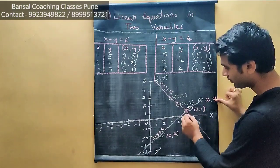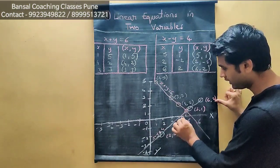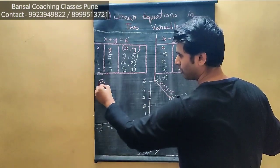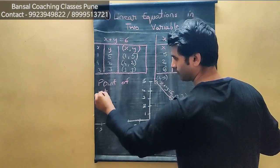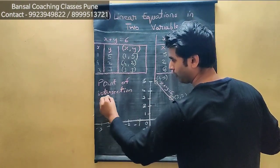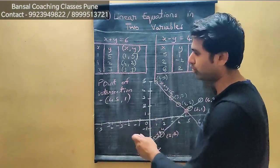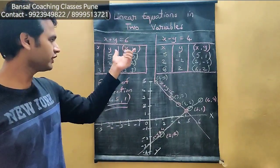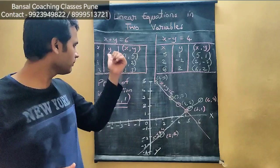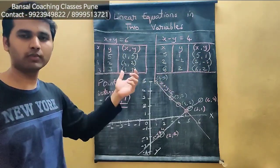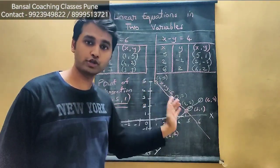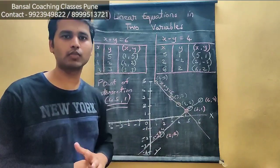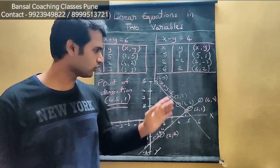This will be the point of intersection of the two lines. Since this was drawn roughly, the approximate point of intersection is (4.5, 1). You should note the coordinates of the point of intersection. The important thing is that all three points for each equation must be collinear.